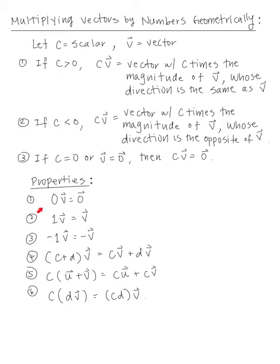Here are the properties of scalar multiplication: 0 times vector V gives the zero vector; 1 times vector V is V itself; negative 1 times V equals negative V. Also, the quantity C plus D times vector V equals CV plus DV — you can distribute. C times the quantity U plus V equals CU plus CV. And C times D times V equals CD times vector V — you can combine the scalars.